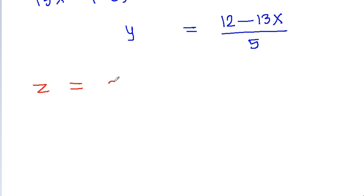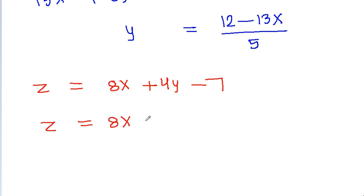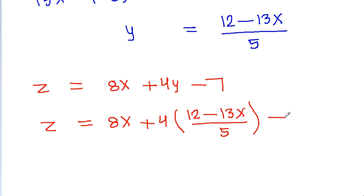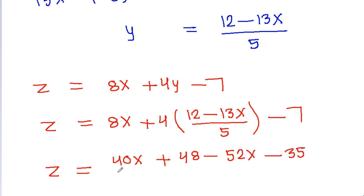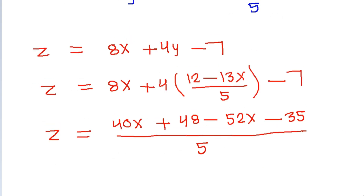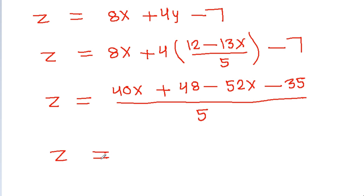Substituting y = (12 - 13x) / 5 into g = 8x + 4y - 7, we get g = 8x + 4·(12 - 13x)/5 - 7. Simplifying: g = (40x + 48 - 52x - 35) / 5 = (13 - 12x) / 5.